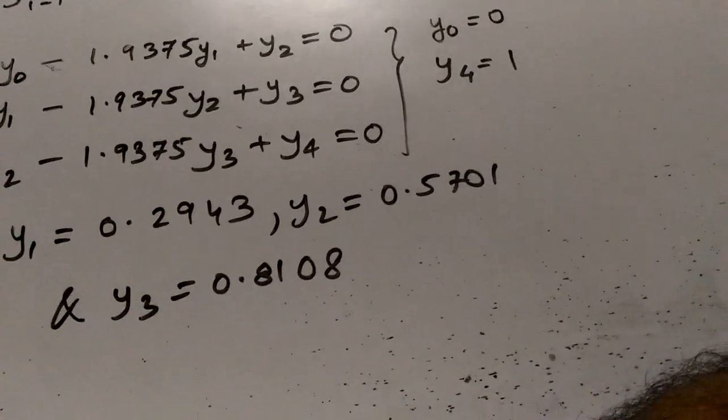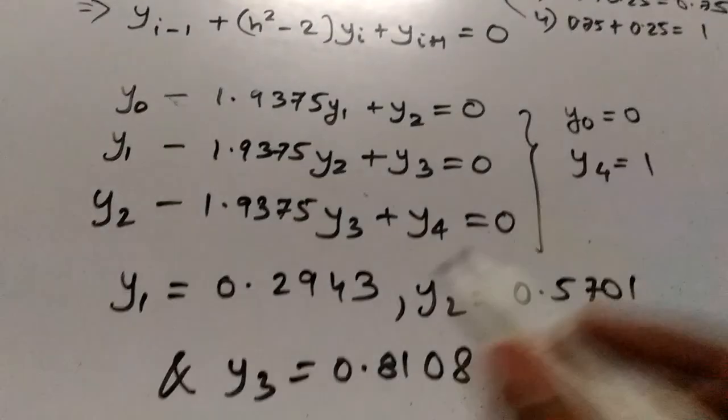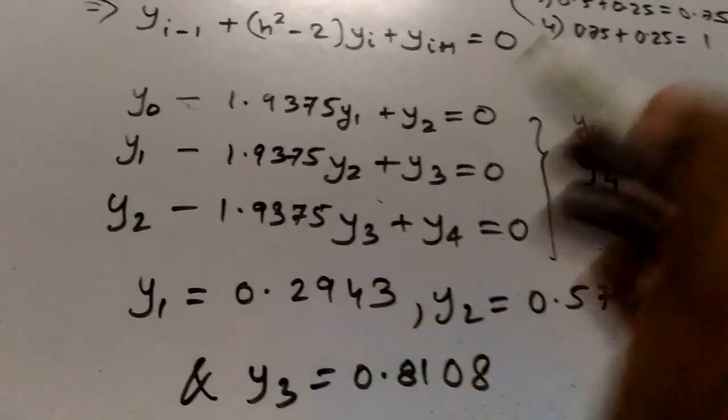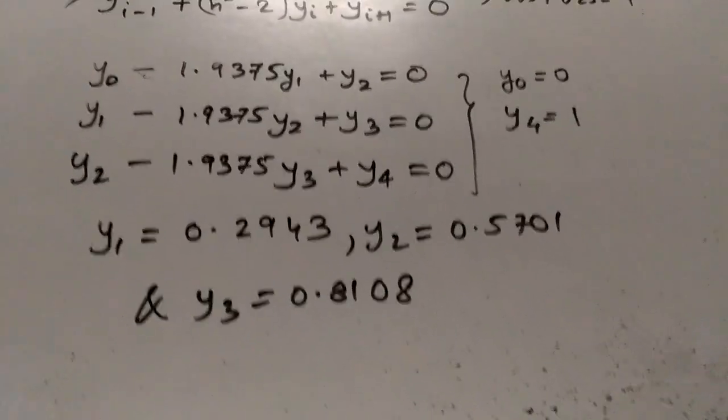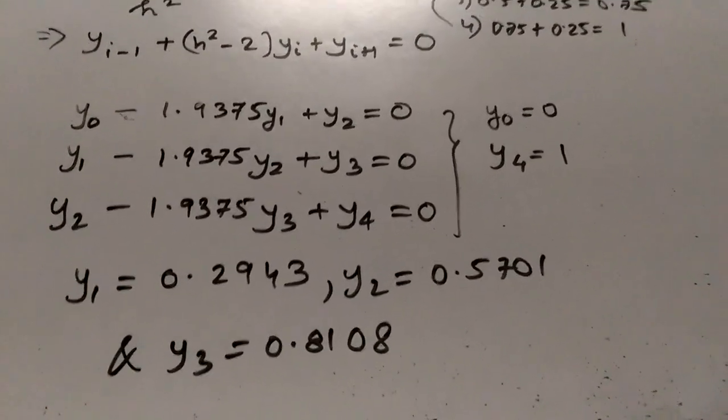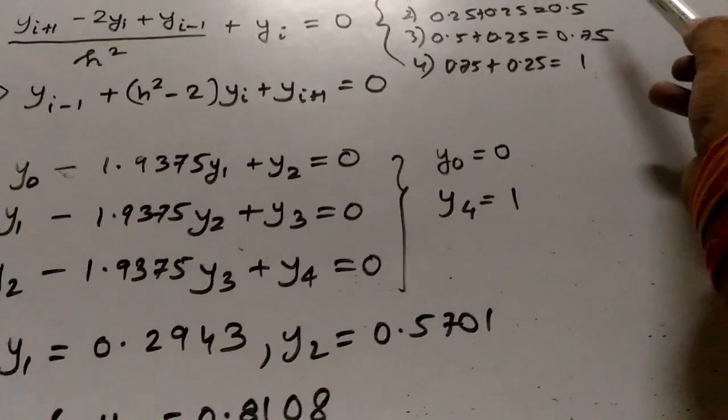So we will get all the values. y_1 means y at x equals 0.25, y_2 means y at 0.5.